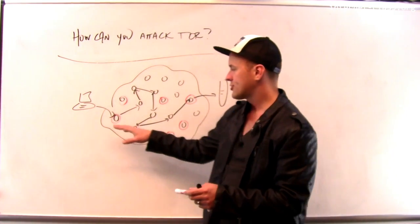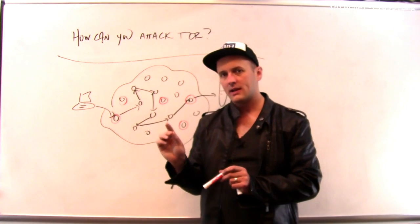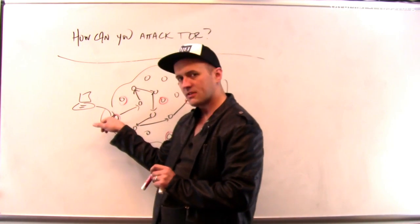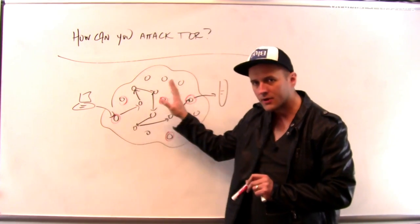Well, if I have control over enough nodes within the Tor network, then for a particular circuit, there's some probability that I can see both the start of the circuit and the end of the circuit. I don't have to control all the nodes along it.